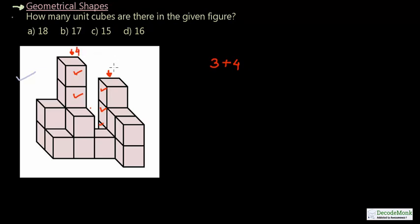This stack or column has got three number of cubes. This column has got four cubes, and there is no cube over here. The number of cubes over here is one, two, so two. The back side or the back end of the figure has got three plus four plus two equals nine unit cubes.